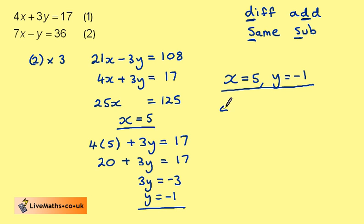If we substitute these values back into the equations, 4 times 5 and 3 times minus 1 is 20 take away 3, which is 17. And trying with equation 2, 7 times 5 take away minus 1 is 35 plus 1, which is 36. So both solutions work.